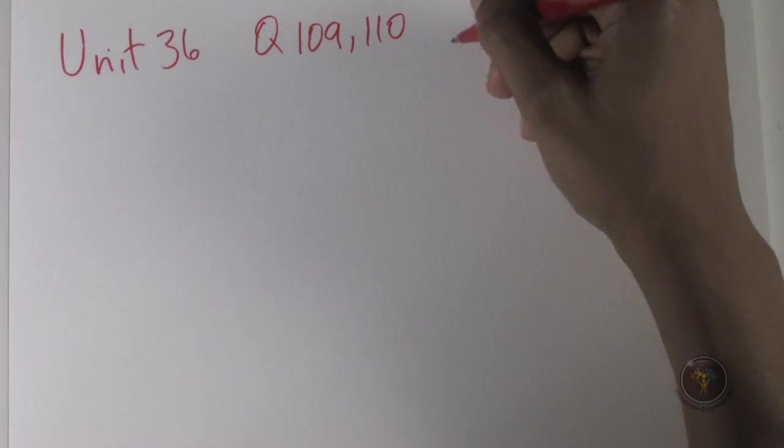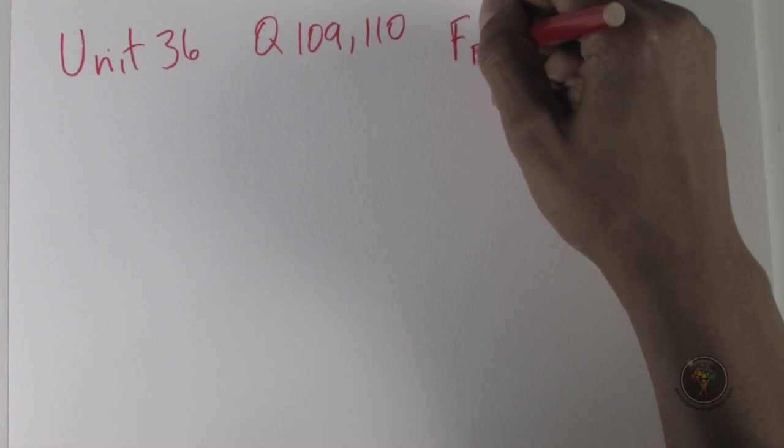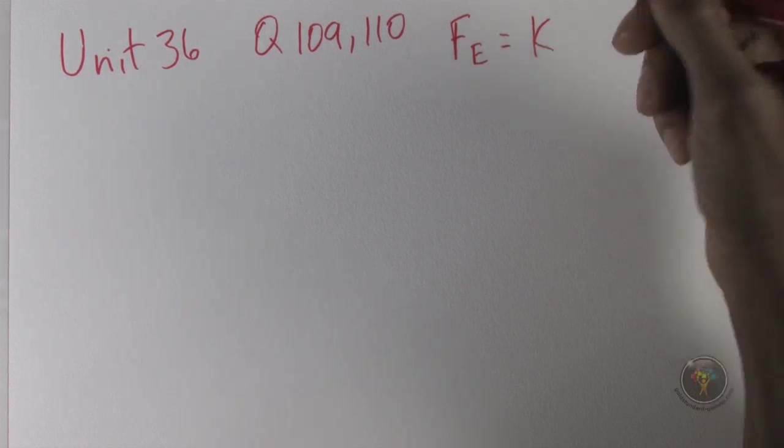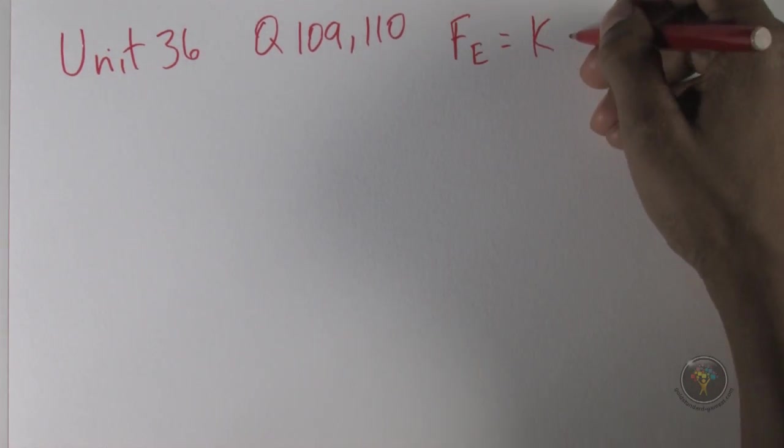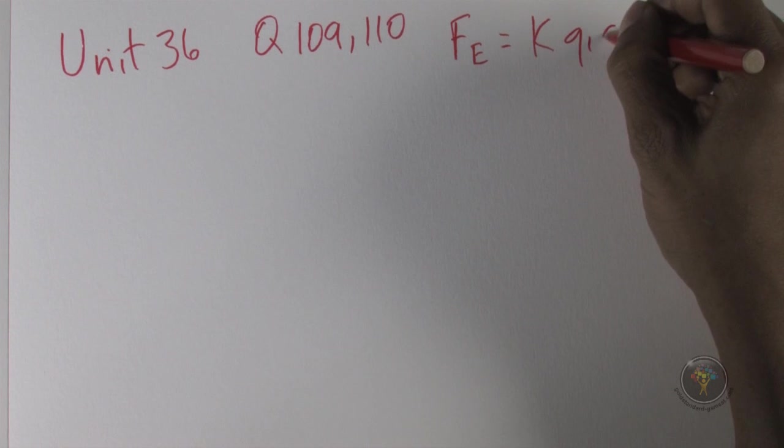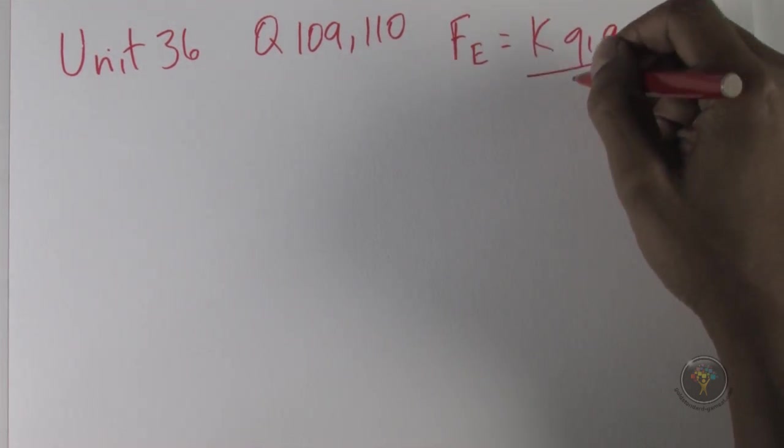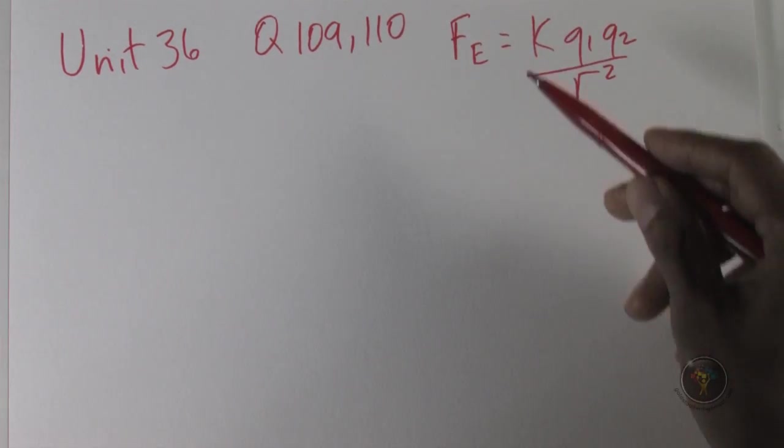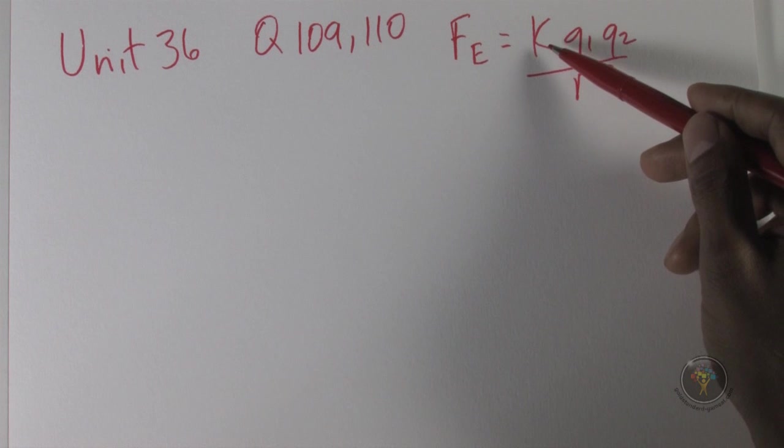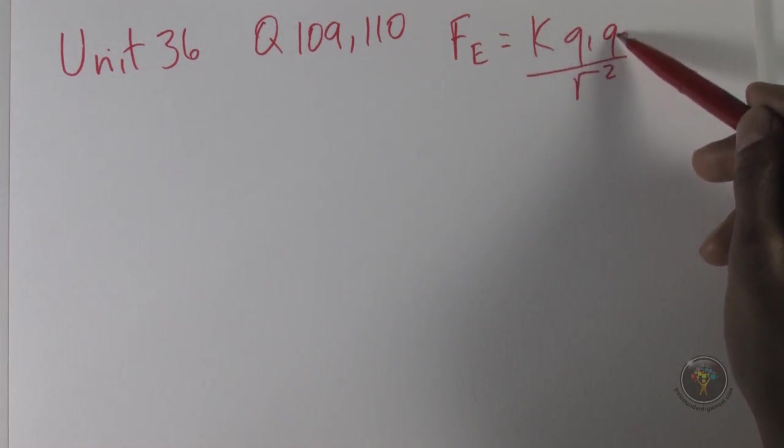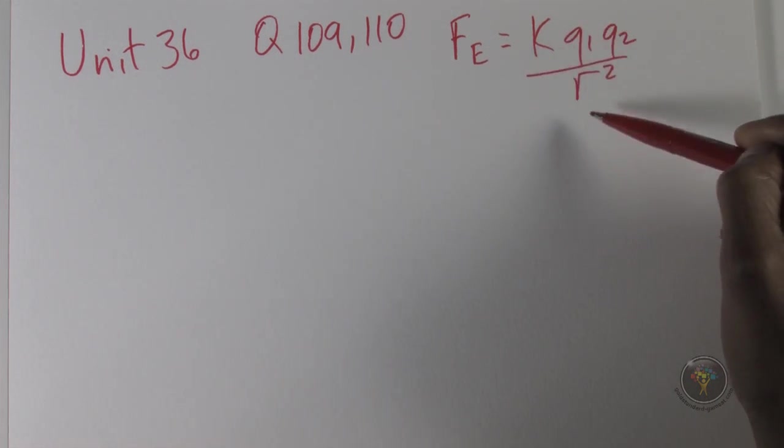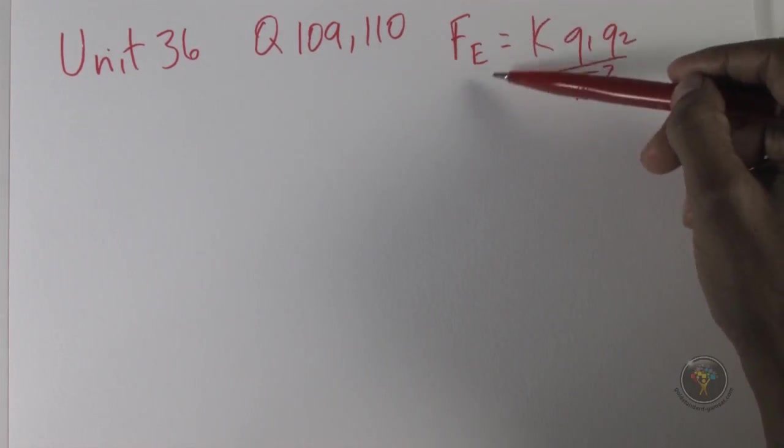All of this is according to Coulomb's law. Coulomb's law has the same structure as Newton's law of gravity. Newton's law of gravity is force of gravity equals the gravitational constant times m1 m2, the two masses, all over r squared, where r is the distance between the masses.